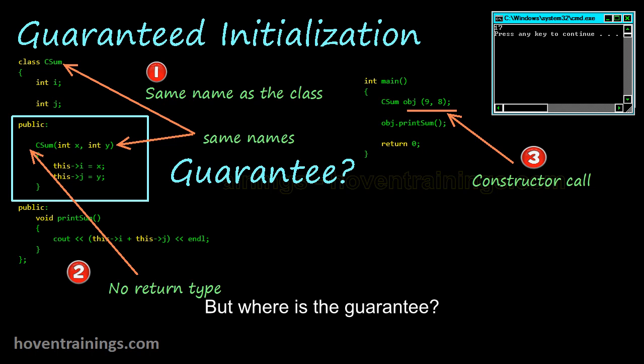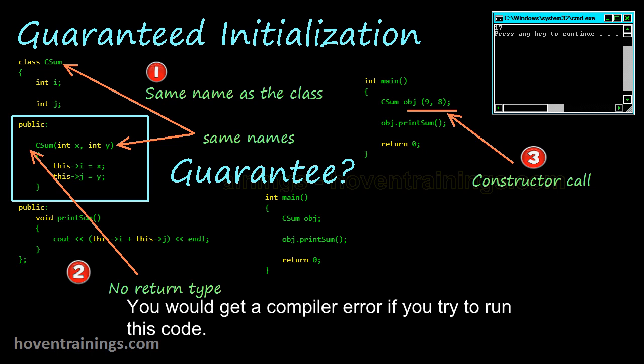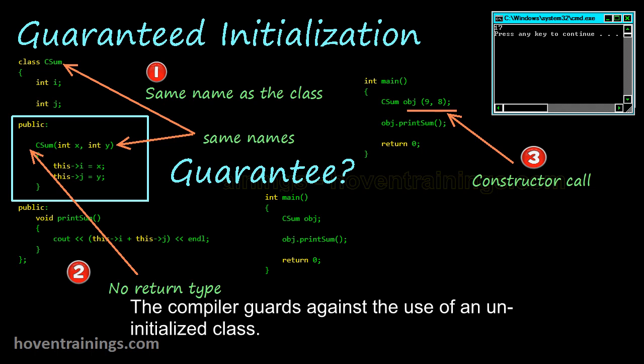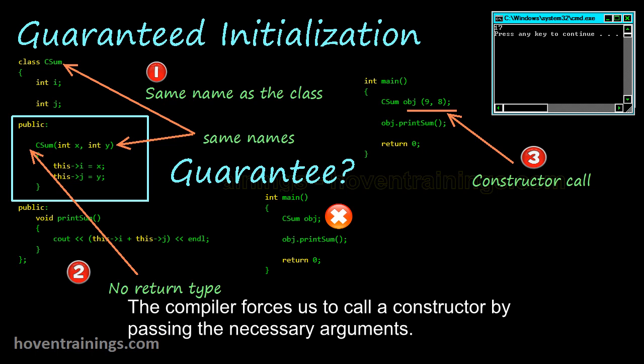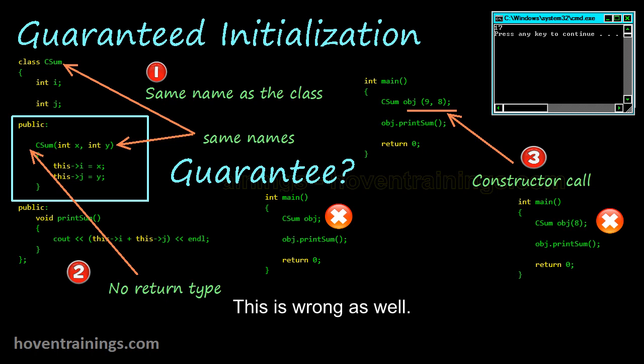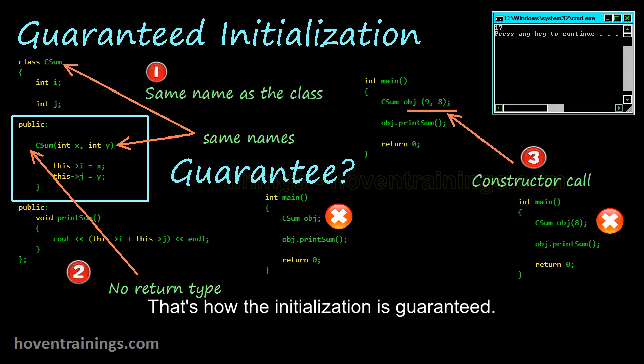But where is the guarantee? Is it ensured that the class members won't go uninitialized? You would get a compiler error if you try to run this code. The compiler guards against the use of an uninitialized class. You cannot create an object of this class. The compiler forces us to call a constructor by passing the necessary arguments. This is wrong as well. There is no constructor that accepts one argument. The compiler ensures that the arguments are passed correctly. That's how the initialization is guaranteed.